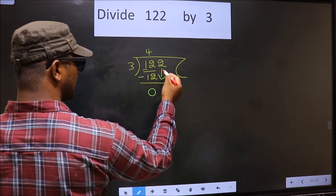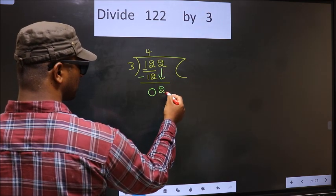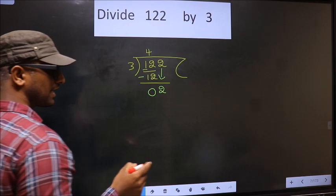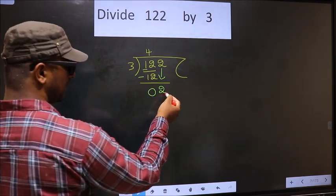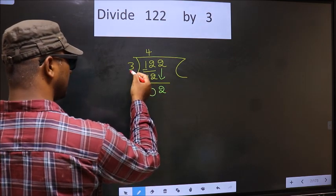Now you bring the beside number down that is 2. This is where the mistake happens. And the mistake is this. Here we have 2, and here 3.